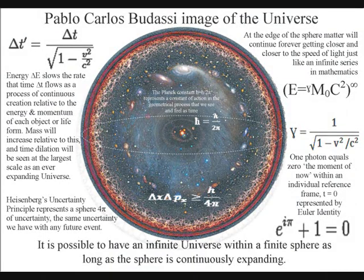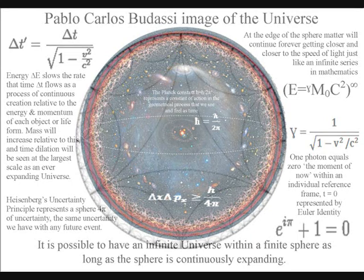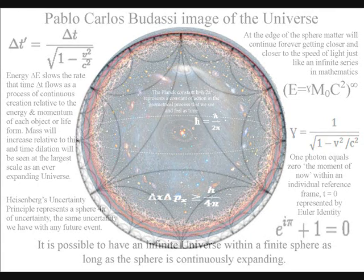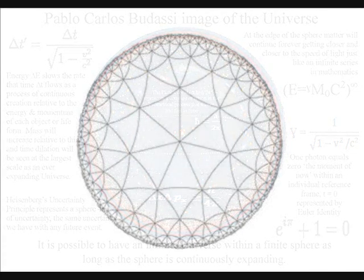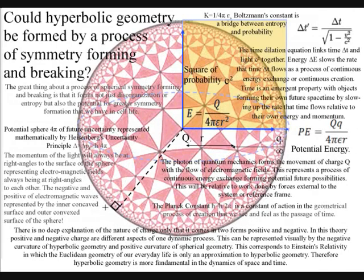This can be visualized using hyperbolic geometry, with every point and every direction being relative to each other. We have here the hyperbolic plane that can represent the universe and the time dilation of Einstein's relativity.